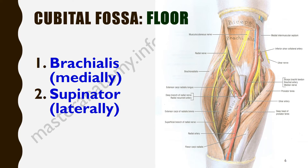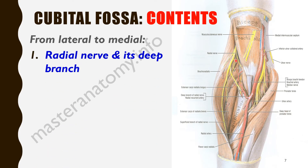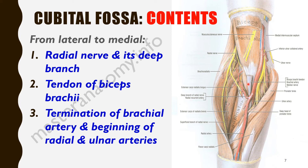Let's look at the contents of the cubital fossa. We'll arrange the contents from lateral to medial. We have the radial nerve, running in between the brachioradialis and the brachialis. It has a deep branch and a superficial branch — the deep branch being the deep radial nerve. We also have the biceps tendon, the tendon of biceps brachii. Then we have the termination of the brachial artery forming the radial artery and the ulnar artery. And finally we have the median nerve.